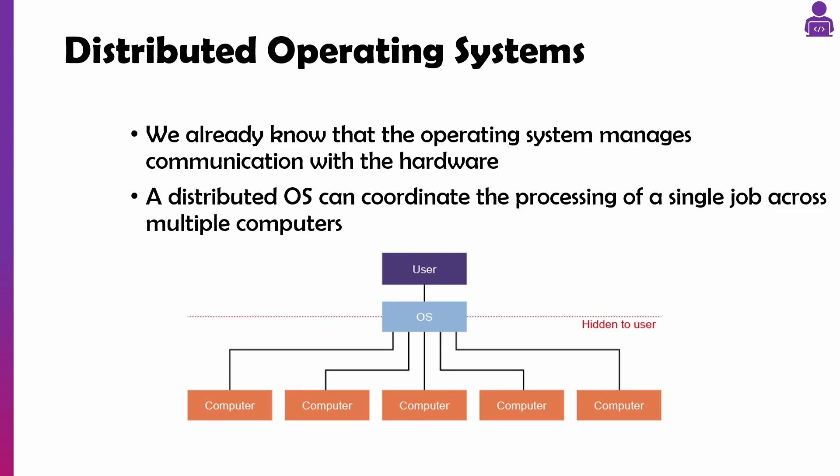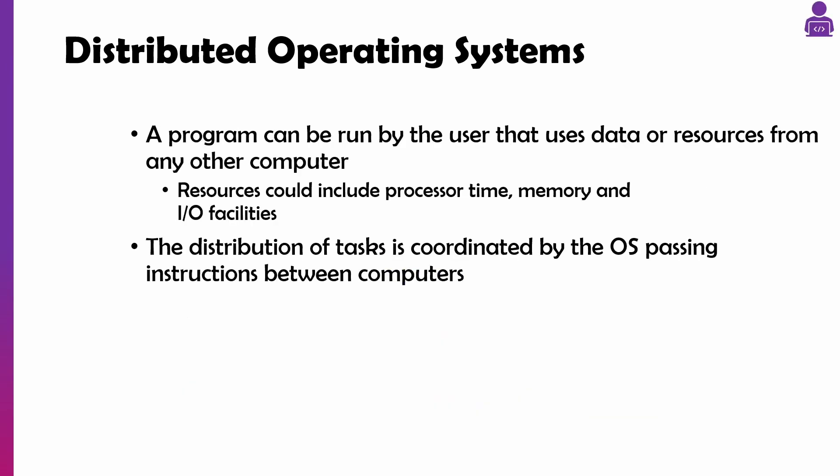A distributed operating system can coordinate processing across multiple computers, but you don't know that. All you know is that you've logged into, say, a Windows server, and it's getting all those resources from multiple computers — memory, pieces of hardware, processing time — all distributed and coordinated together by the operating system.